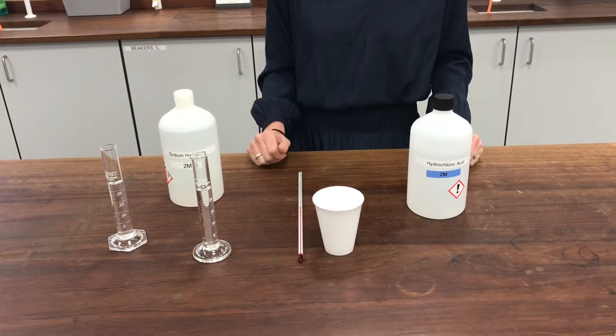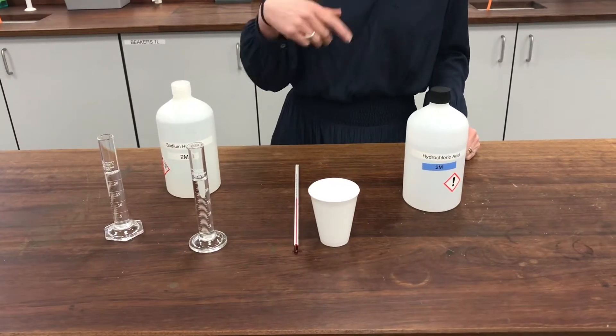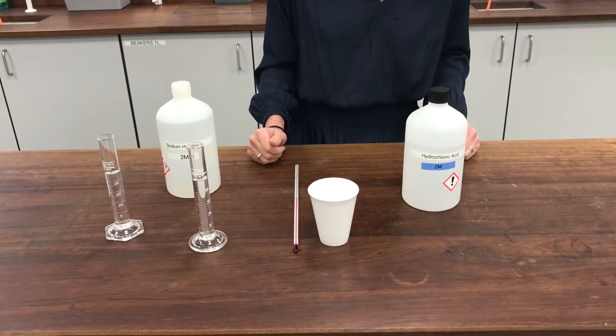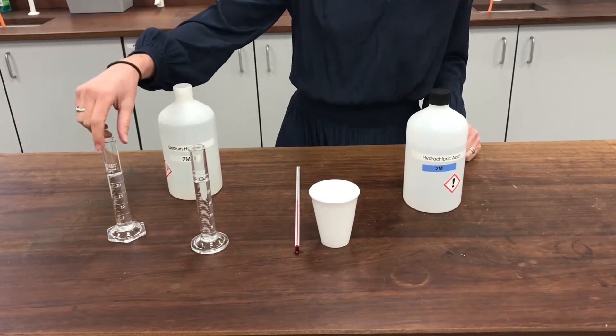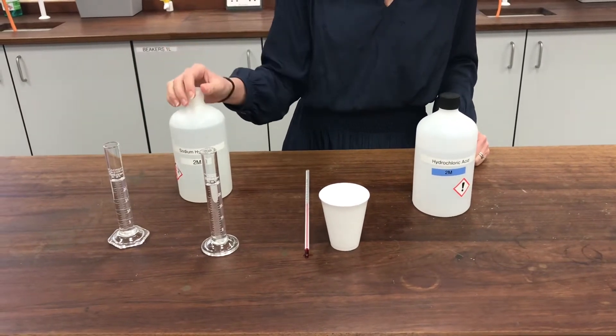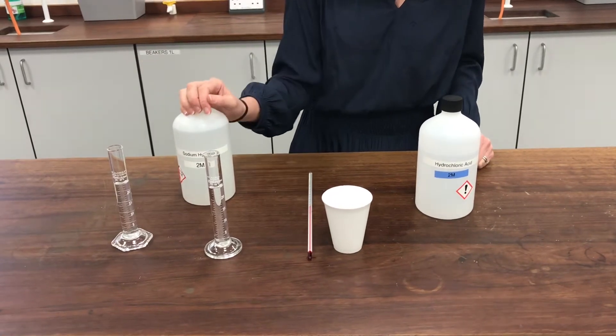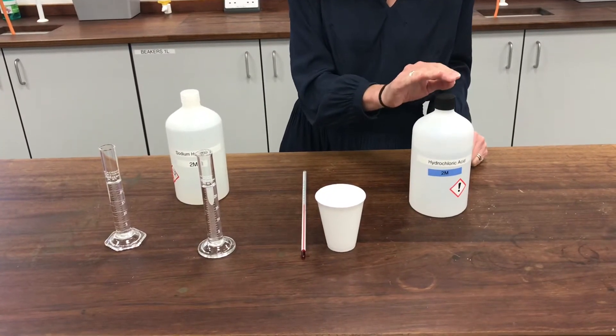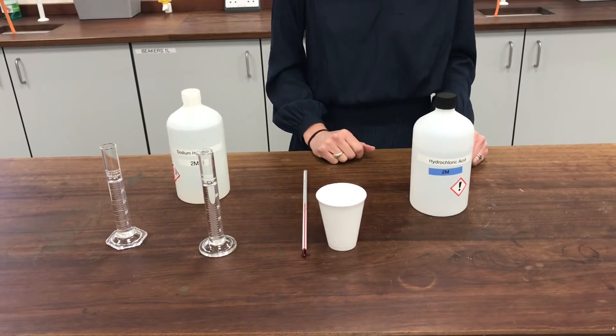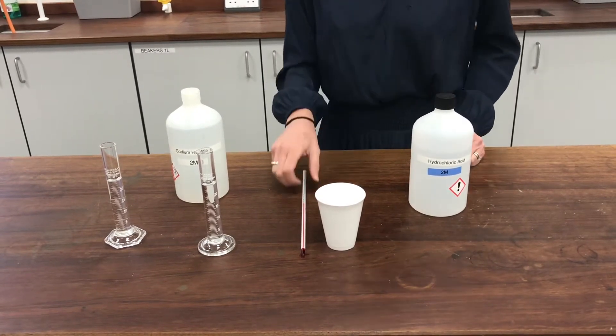We can see whether the temperature goes up or down. When we've recorded that maximum temperature change, I'm then going to add another 25 millilitres of alkali to it. Now at that point, I'm hoping there will be no acid left for it to react with. We can have a think about what might happen to my temperature at that stage.